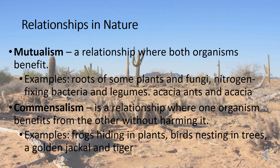Now, let us review the relationships in nature. First is mutualism. Mutualism is a relationship where both organisms benefit. Examples of these are roots of some plants and fungi, nitrogen-fixing bacteria and legumes, and acacia ants and acacia. Next is commensalism. It is a relationship where one organism benefits from the other without harming it. Examples are frogs hiding in plants, birds nesting in trees, and a golden jackal and tiger.